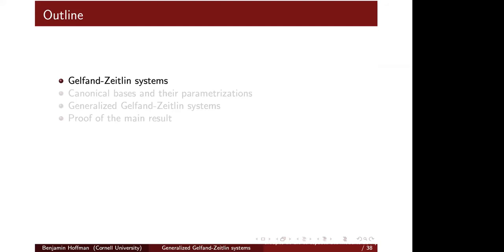The outline of the talk is going to be pretty straightforward. I'll remind everyone what a Gelfand-Zetlin system is. The goal is to give some generalization of this, so to do that I'll remind everyone what canonical bases are, then say what a generalized Gelfand-Zetlin system should be, and then show how to construct one.